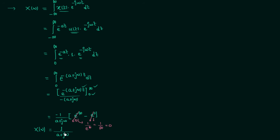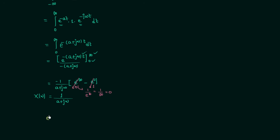So finally we have the Fourier transform equal to 1 over (a plus j omega). This is the Fourier transform of e power minus at, u(t), when a is positive. Remember this result — we will use it while deriving the Fourier transform of the signum function.